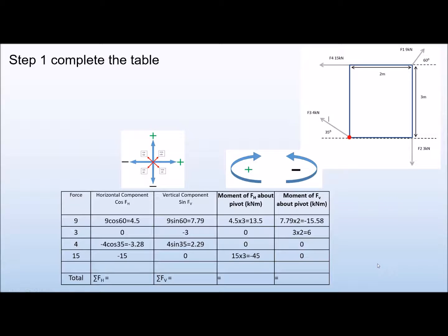Force 4 is a 15 kN force on the horizontal pulling to the left, so the horizontal component is −15 kN. There is no vertical component, so that is zero. The moment is 15 kN × 3 m = −45 kNm, and there is no vertical moment, so that is zero. That accounts for all four forces.